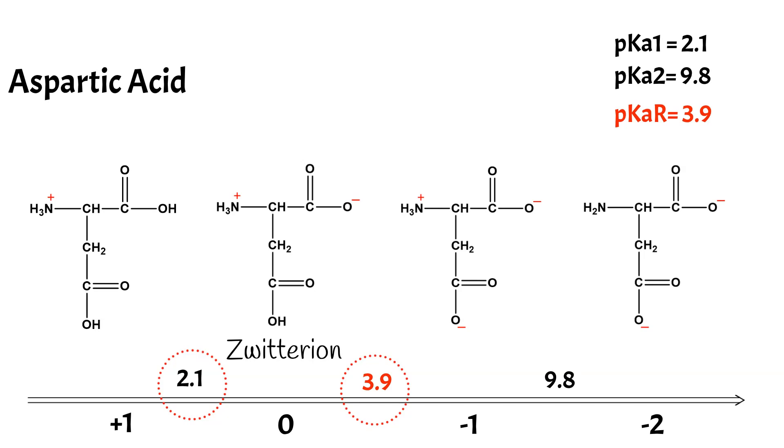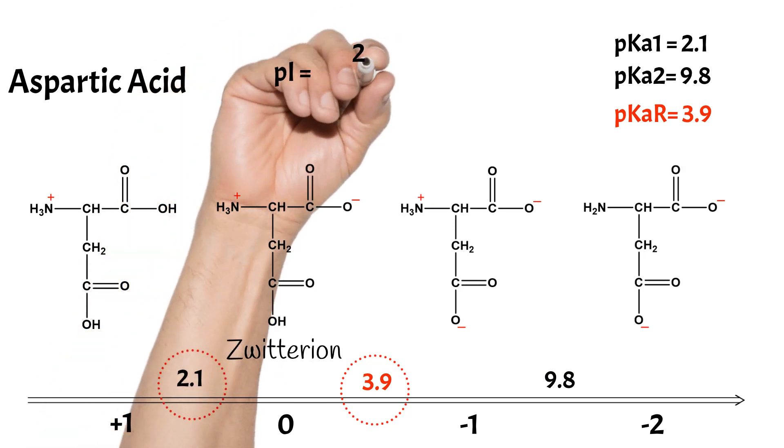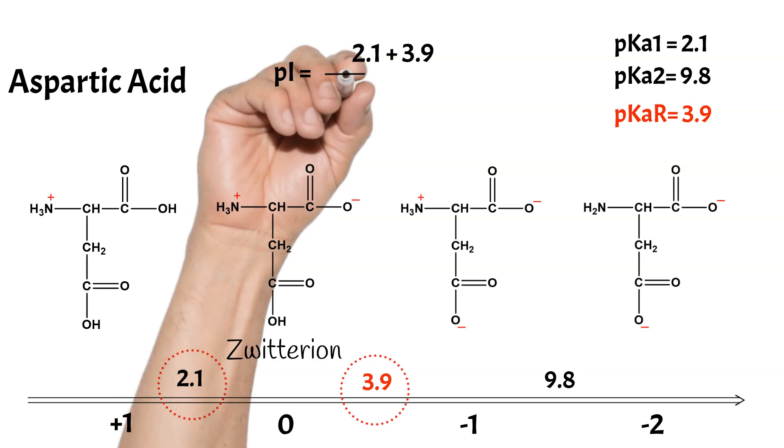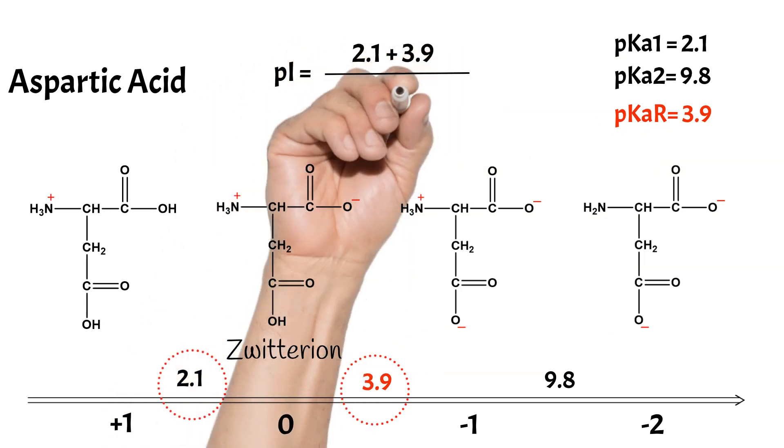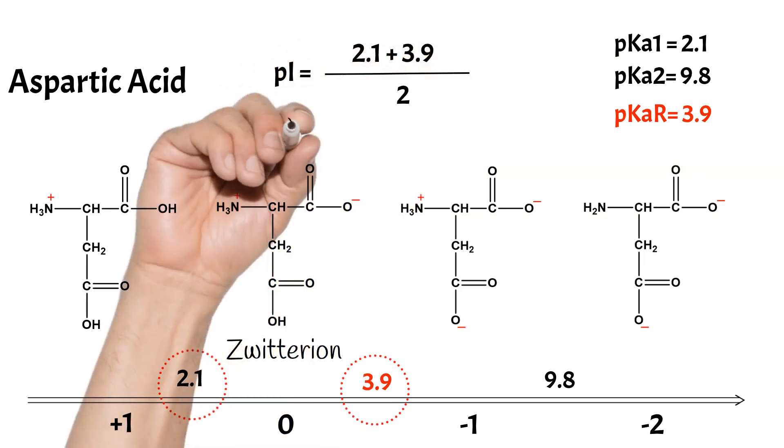Therefore, the pI value will be calculated using only the pK1 and pKr values. Then for acidic amino acids, the pI value is calculated based on the pK values for the two carboxylic groups.